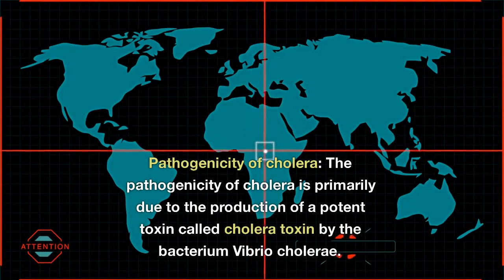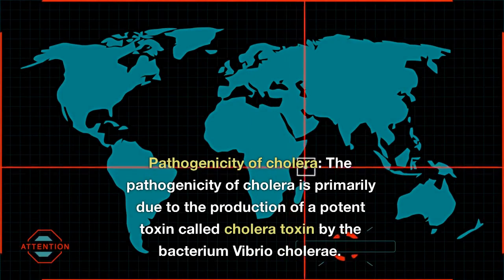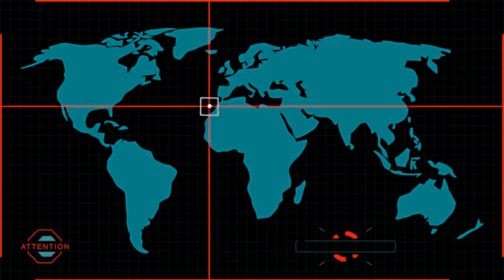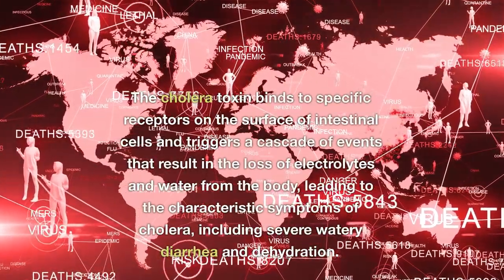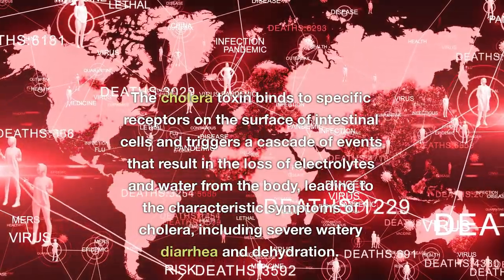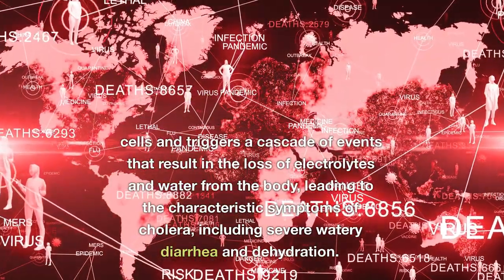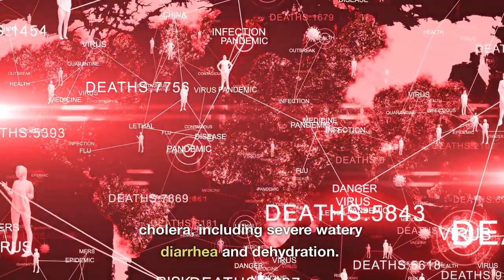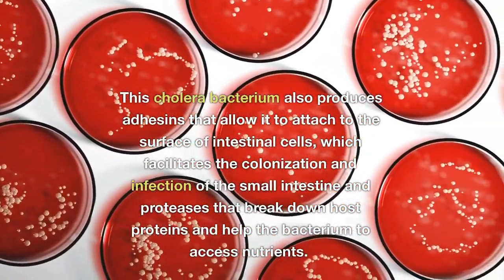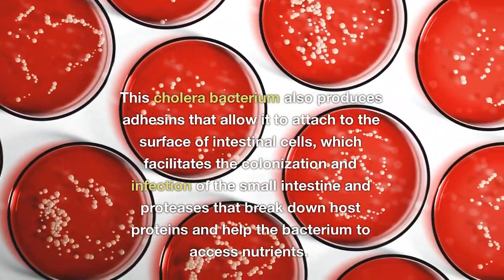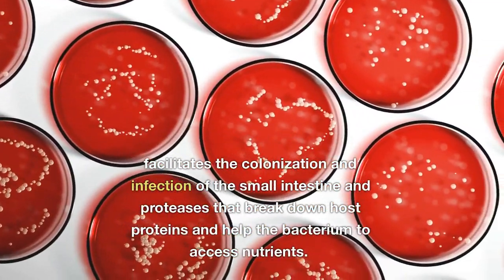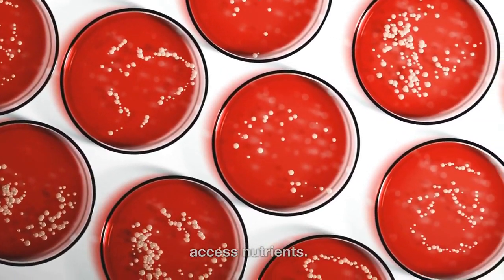Pathogenicity of Cholera. The pathogenicity of cholera is primarily due to the production of a potent toxin called cholera toxin by the bacterium Vibrio cholerae. The cholera toxin binds to specific receptors on the surface of intestinal cells and triggers a cascade of events that result in the loss of electrolytes and water from the body, leading to the characteristic symptoms of cholera, including severe watery diarrhea and dehydration. The bacterium also produces adhesins that allow it to attach to the surface of intestinal cells, which facilitates colonization and infection of the small intestine, and proteases that break down host proteins and help the bacterium to access nutrients.